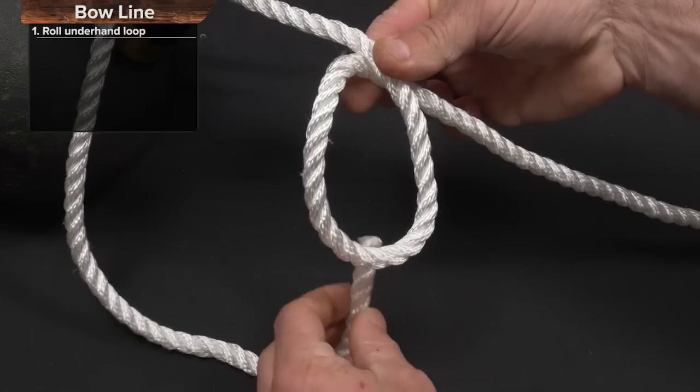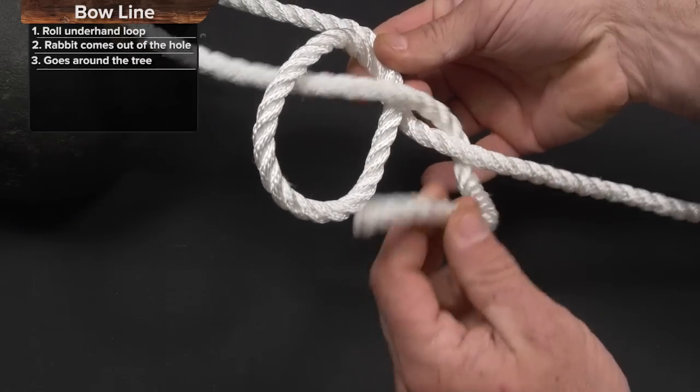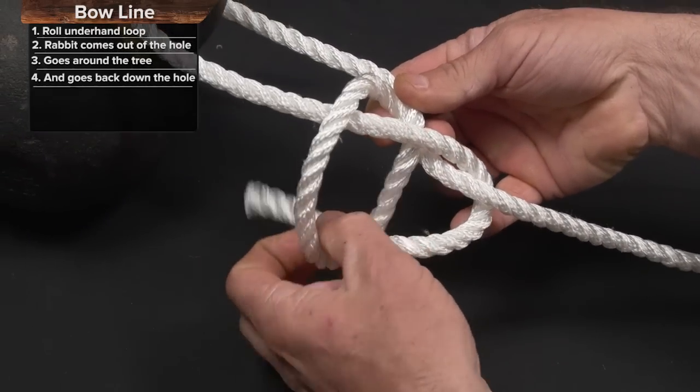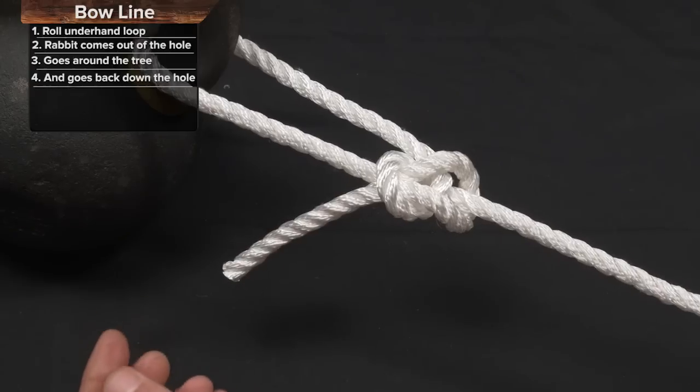And then the very simple thing is the rabbit comes out of the hole, it goes around the tree, and it goes back down the hole. Then you pull on the line and you form a knot.